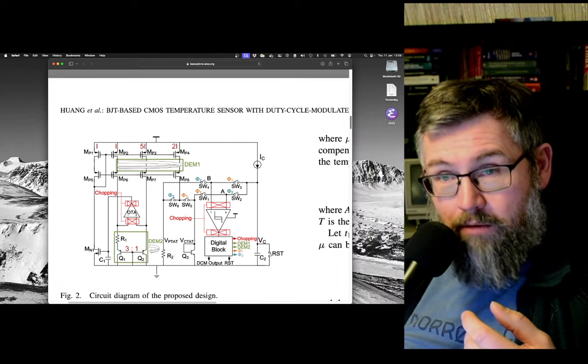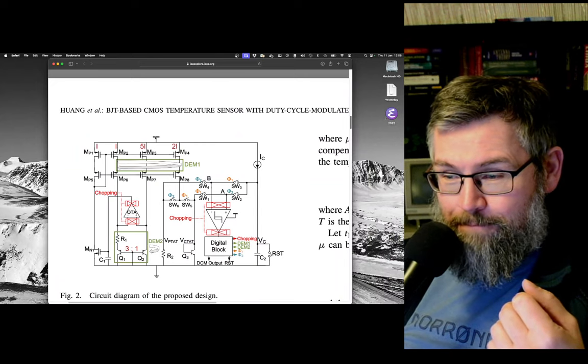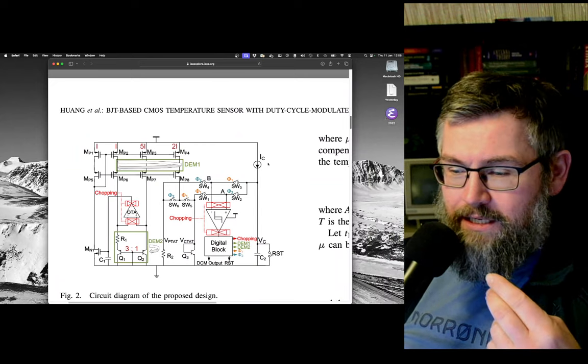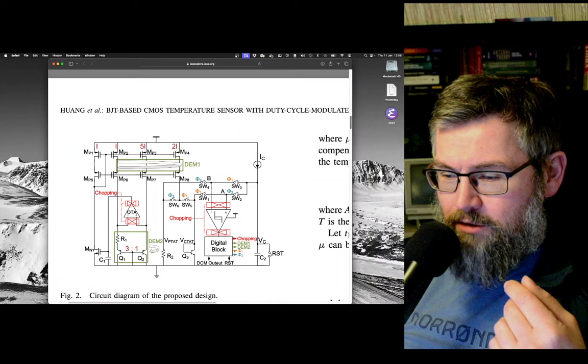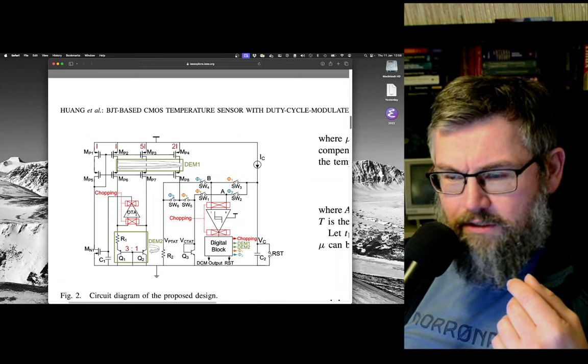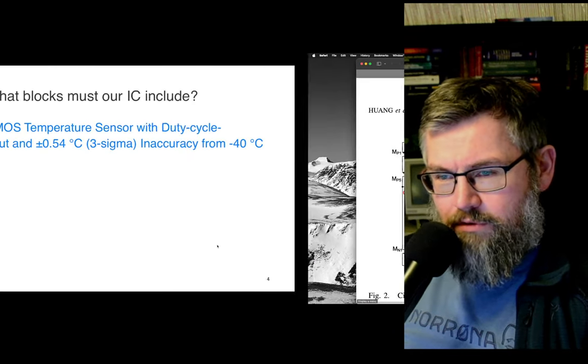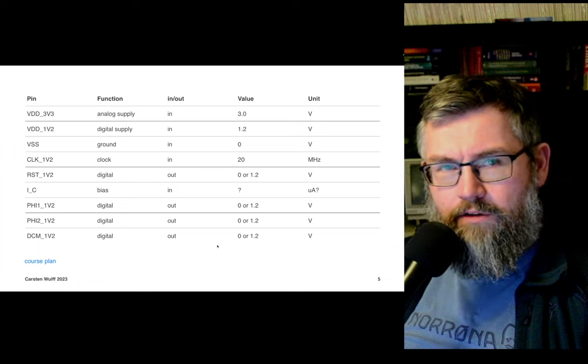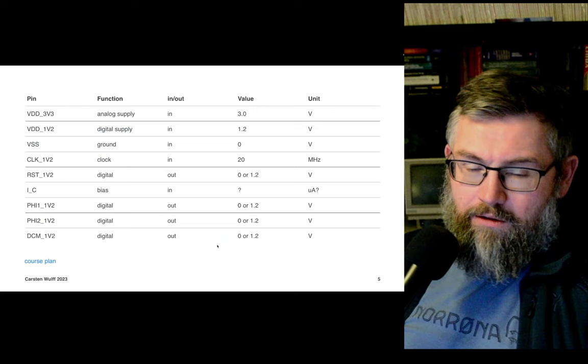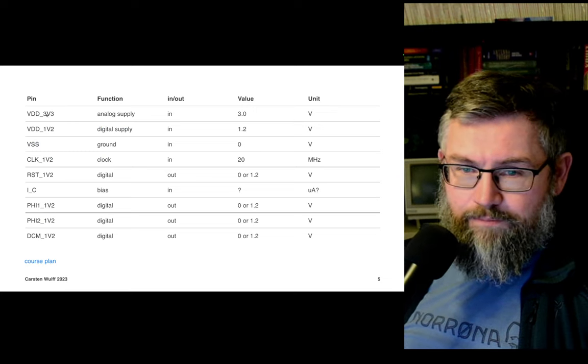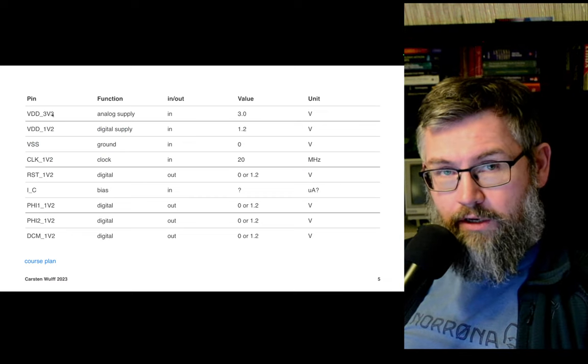We have a ground, so there needs to be a ground pin on this chip. There's a VDD. There is a current somehow. There's some output signals, a reset signal. There's a digital block, which means there must be a clock. And if you read the paper and try to list up what are the different things that this integrated circuit must contain, this is the list I got.